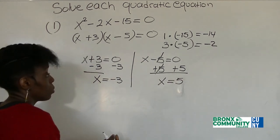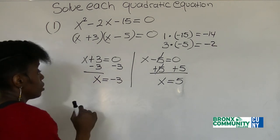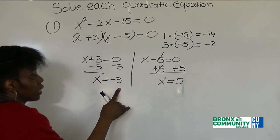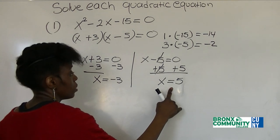So for our quadratic equation, our solutions are x is equal to negative 3 and x is equal to 5.